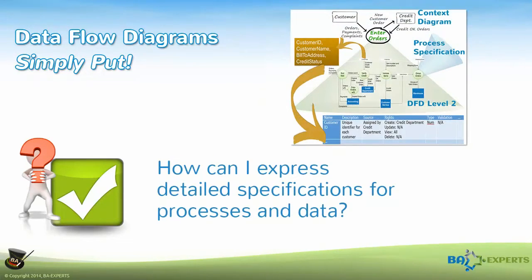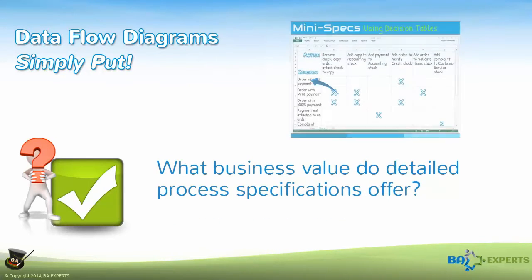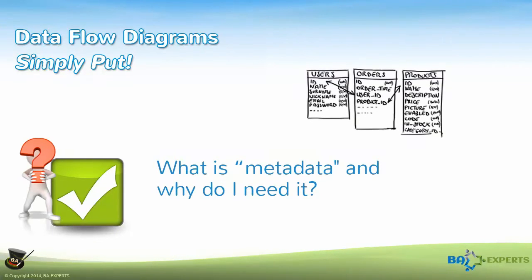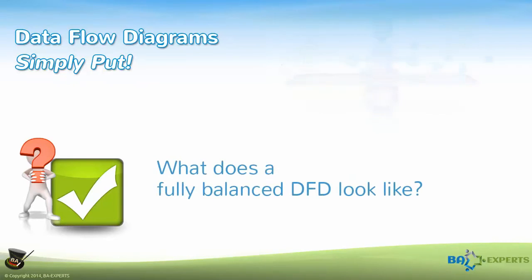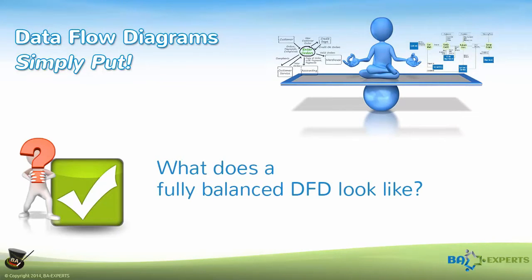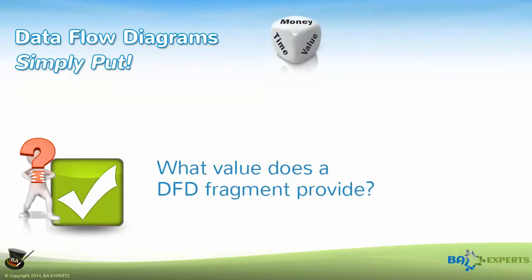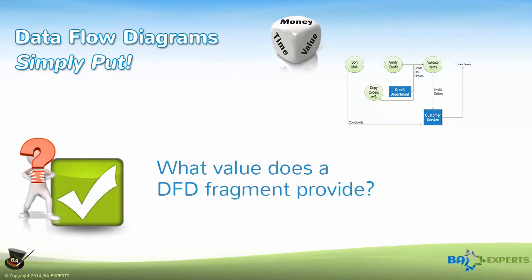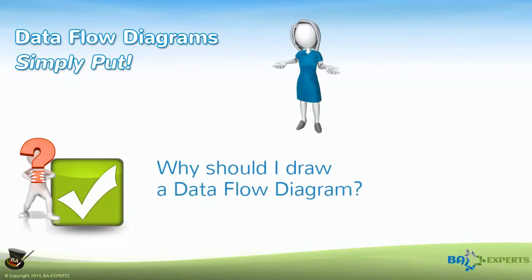What is the most efficient approach to balancing a DFD? How can I express detailed specifications for processes and data? What business value do detailed process specifications offer? What is metadata, and why do I need it? What does a fully balanced DFD look like? What value does a DFD fragment provide? And ultimately, why should I draw a Dataflow Diagram?